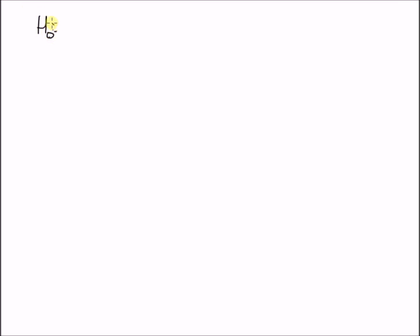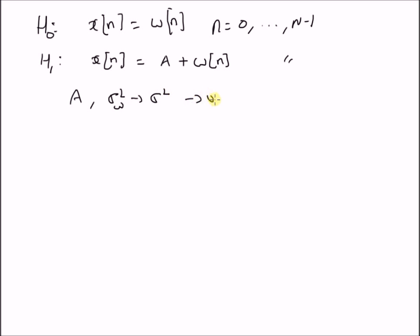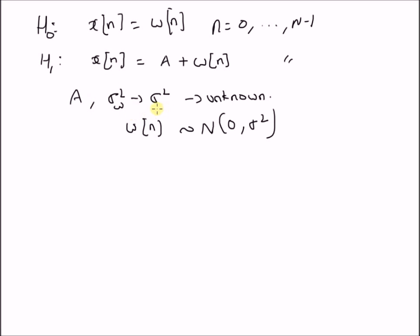Given the models: under the null hypothesis, we have x[n] = w[n], where n = 0 to N minus 1. Under the alternate hypothesis, x[n] = A + w[n], where A is a DC level. The main problem is that both the DC level A and the variance of the noise sigma squared are unknown.